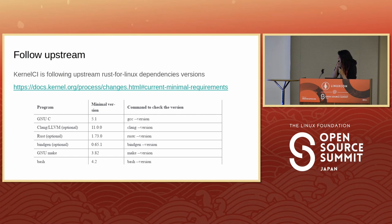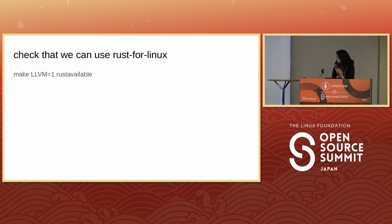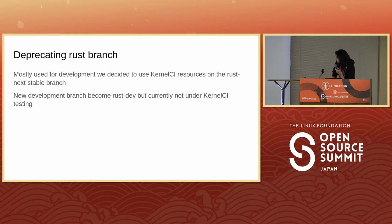On kernel.org documentation you can find the minimal version for building Rust for Linux in the kernel, and you can check whether Rust is available. Recently we deprecated the Rust branch, so the new development branch in Rust for Linux became rust-dev, but it is not yet under KernelCI. The problem of putting everything under KernelCI is that we also need to ensure we are not overflowing KernelCI's resources.